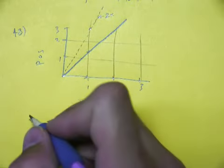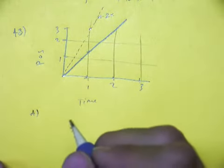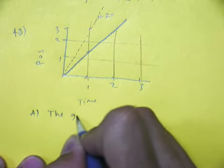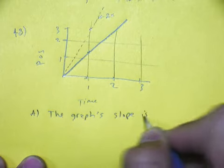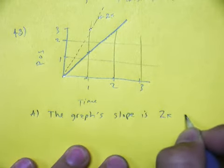So for part A it says describe this graph. The graph slope is two times as big.